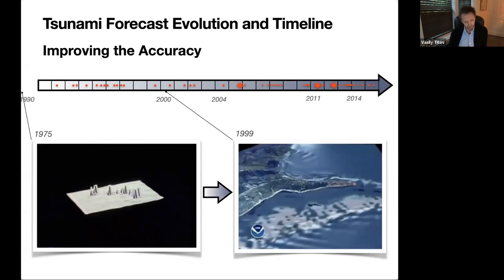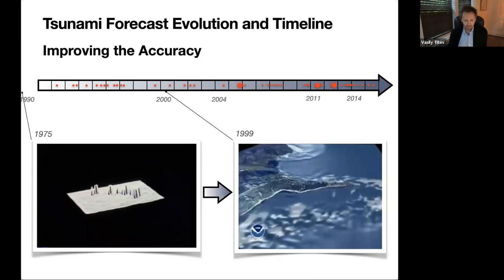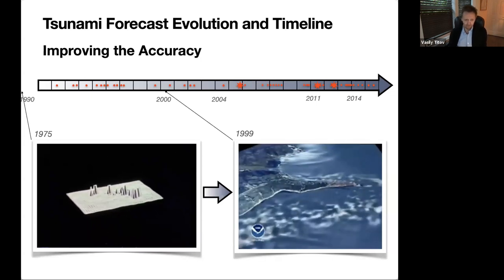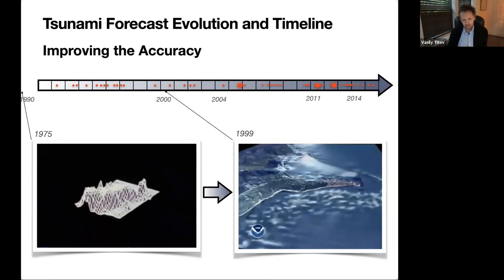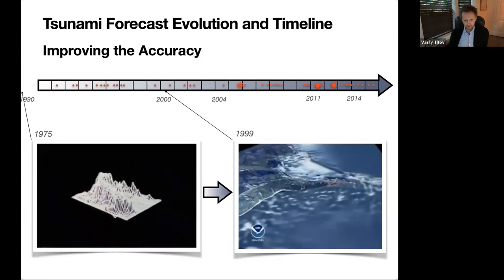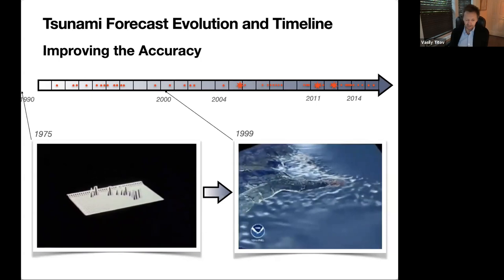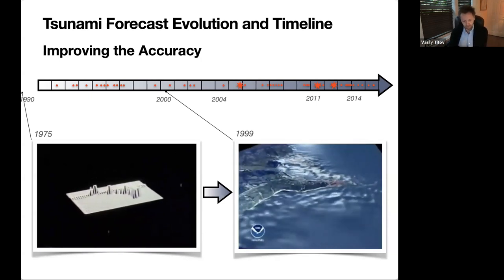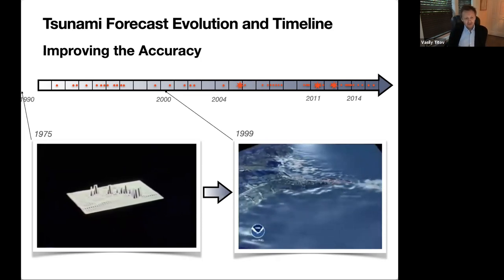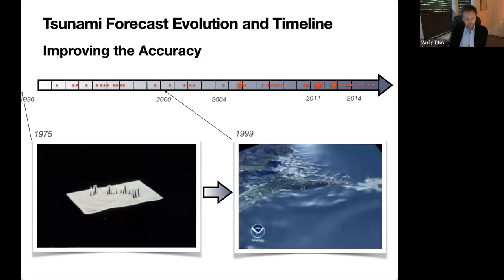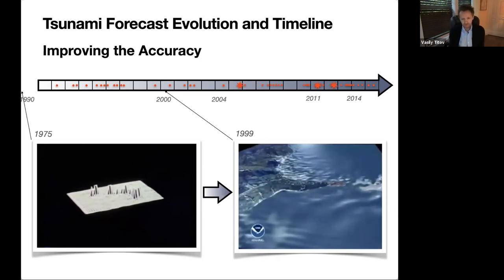Fast-forward to around 2000: the same shallow water wave equations are used, but improved solutions, data, and visualization produce a model that looks very much like a real tsunami. What you see on the right is the simulation of the 1993 Japan tsunami that killed over 200 people on the Okushiri peninsula. What it took to move from 1975-type models to 1993-quality models involved better computers — capacity roughly doubling every two years.